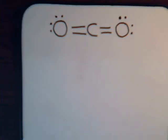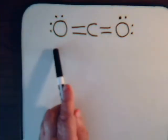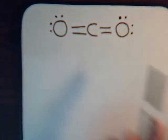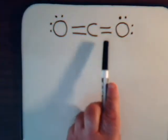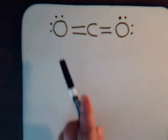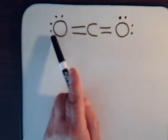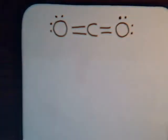Let's talk about carbon dioxide. Here's the molecule: two bonds between a carbon atom and an oxygen atom on each side, so the carbon forms a total of four bonds — two sigma bonds and two pi bonds. For oxygen, we have two lone electron pairs on each oxygen atom.